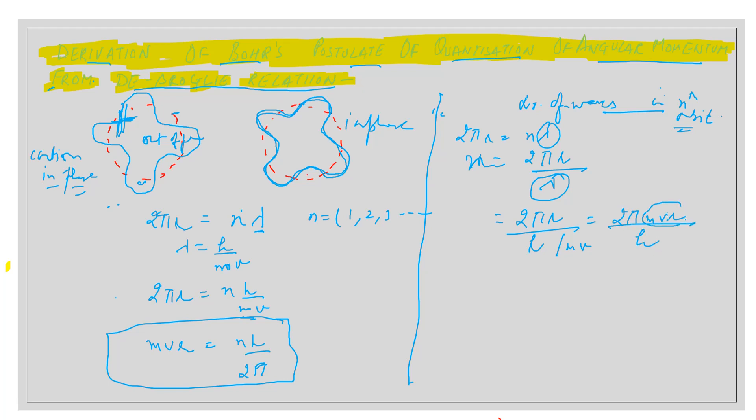Now, what is this mvr? We have just done that: mvr = nh/2π. Here also this is h. Cancelling the terms, what we will get? Number of waves equals n.